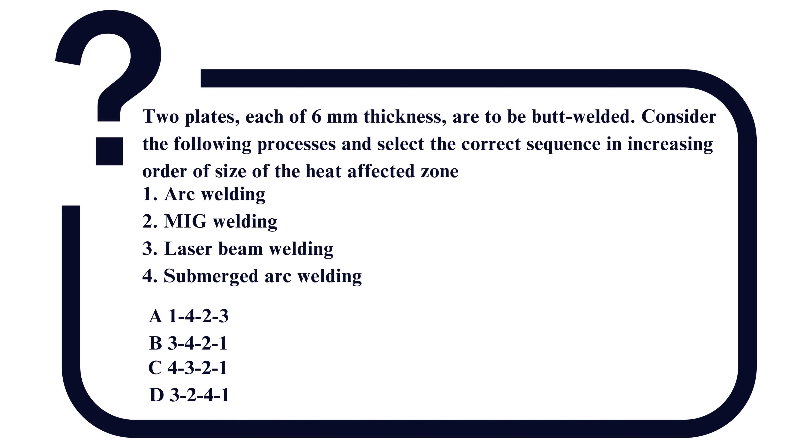इस question में कई सारे welding processes दिये हुए हैं और इनके increasing order में sequence को बताना है — कौन सा welding process है जिसका heat affected zone कम है और कौन सा ज्यादा है। यहाँ पर दो plates को butt welded किया गया है, यानि butt joint है। Butt welding में दो metal plates के cross section को side by side जोड़ते हैं। यहाँ पर चार welding processes हैं।